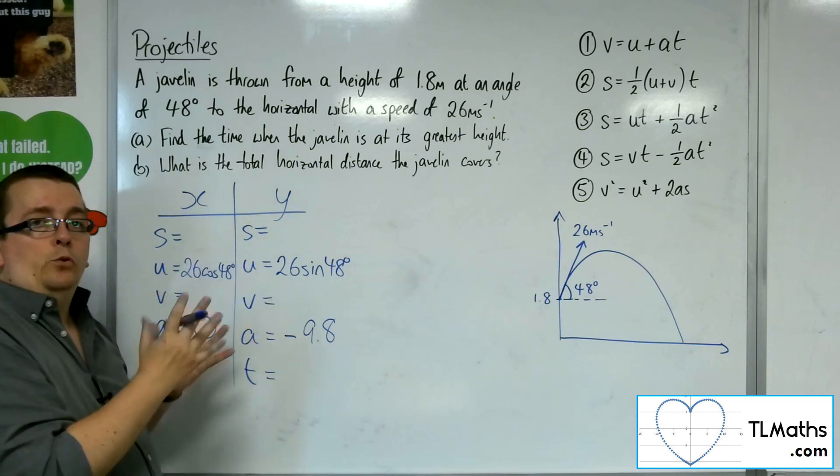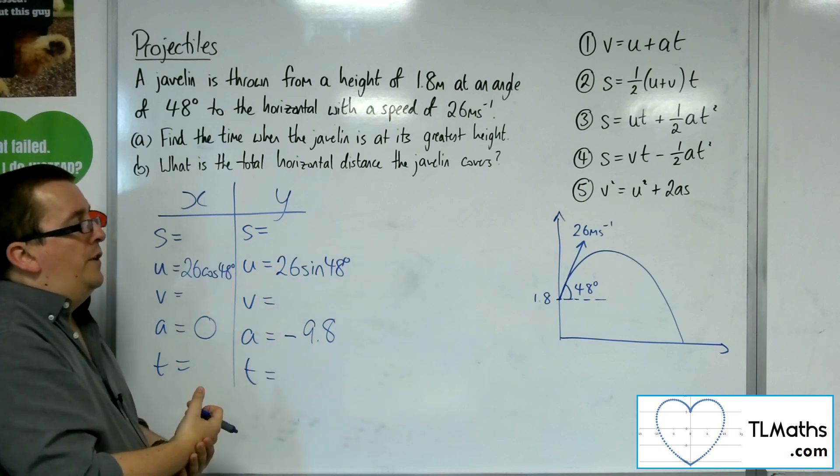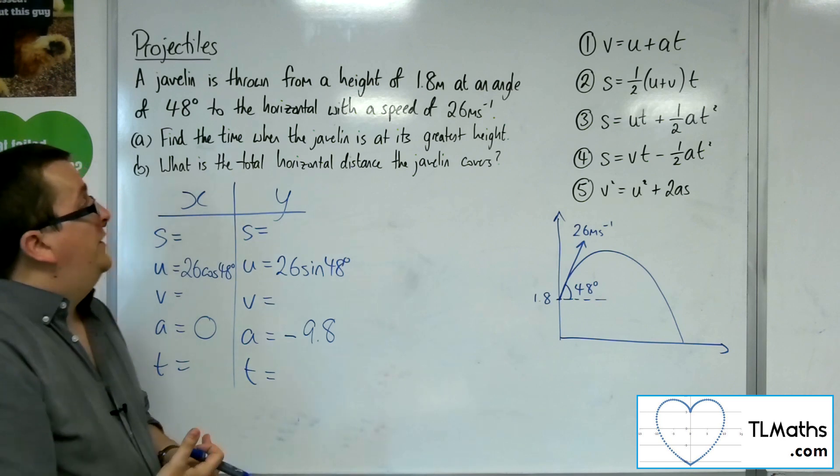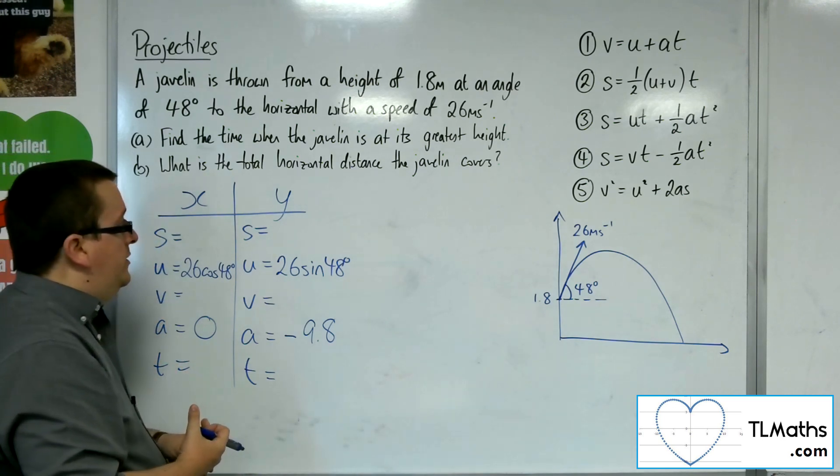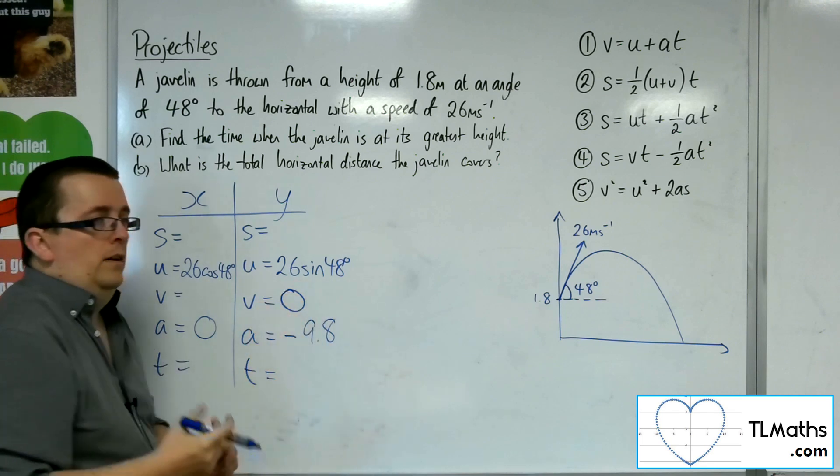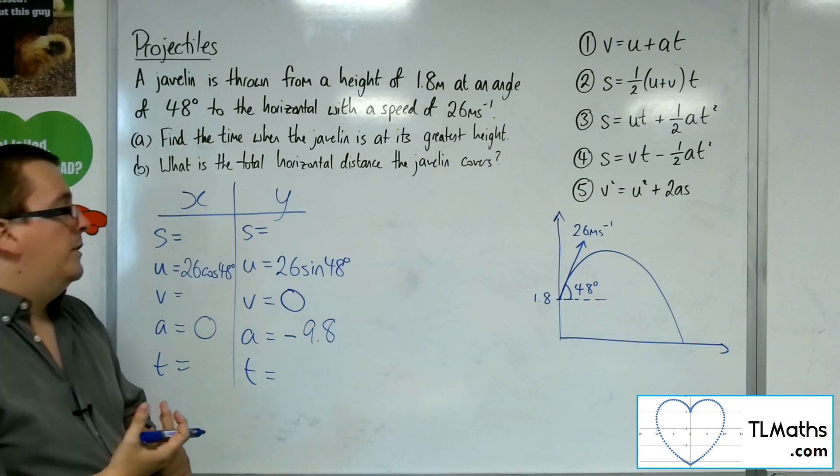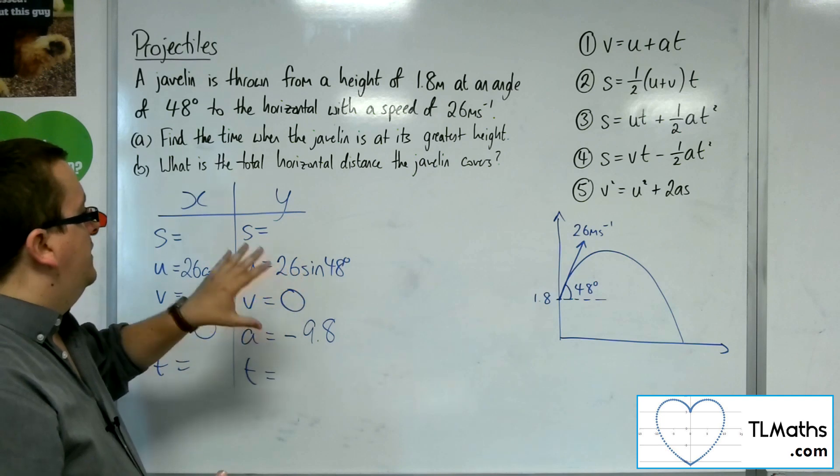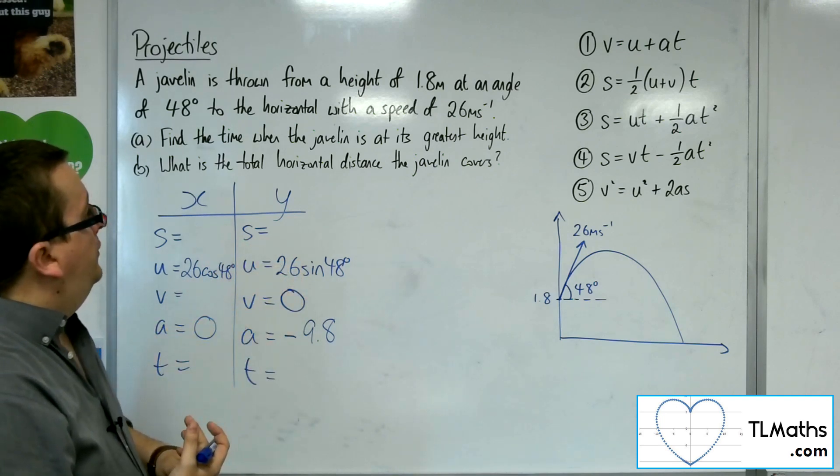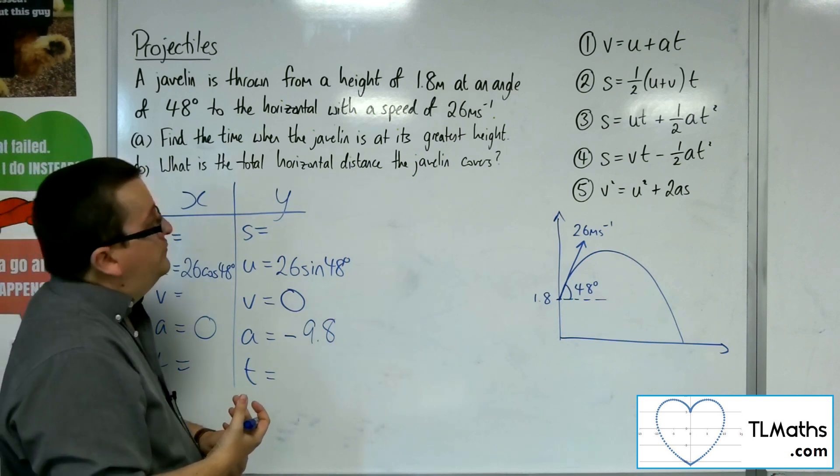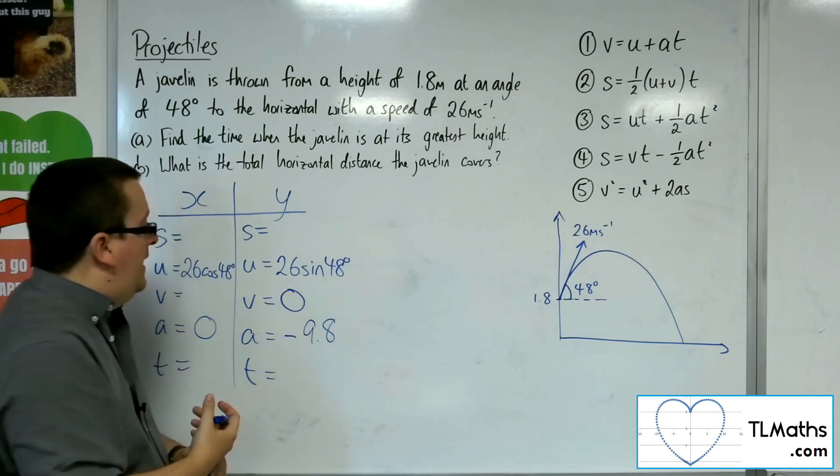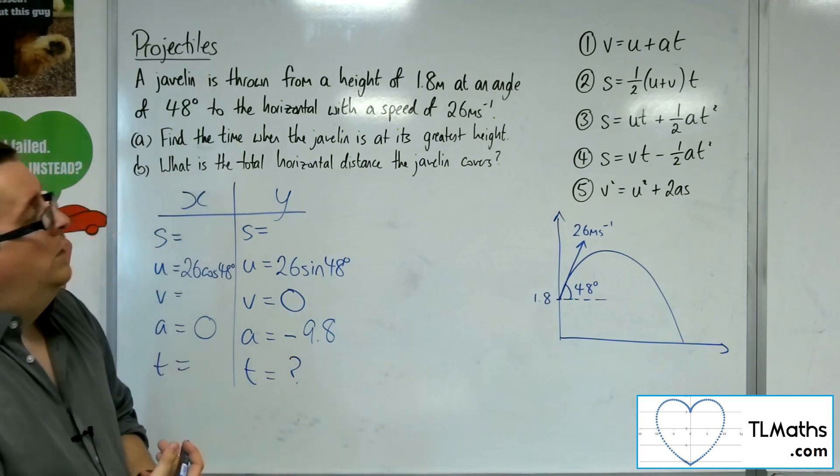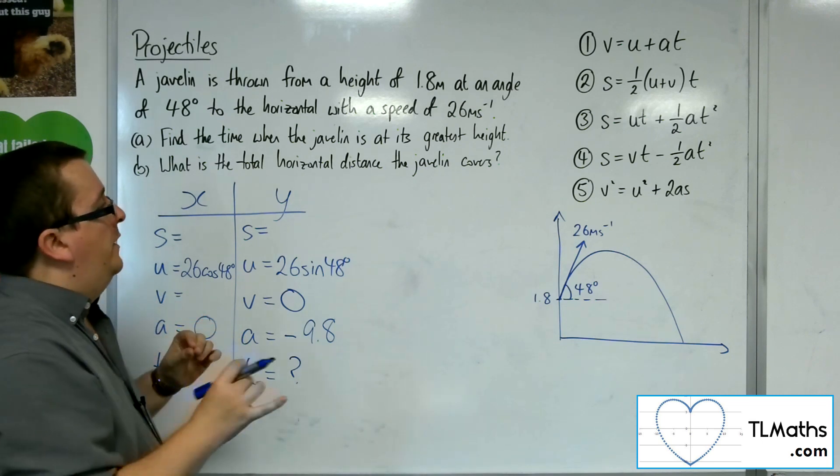Because if I put it in here, I'm going to assume that s is always 1.8, for example, for the vertical displacement. And that's not the time that I'm looking for. So I'm looking for the time when the javelin is at its greatest height. So its vertical velocity by that point will be 0. I need to really look at that height there. I need to use that information. So that initial displacement, we'll come into it in a moment.